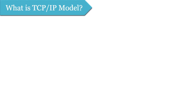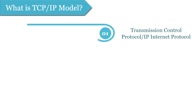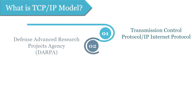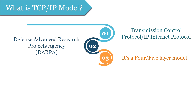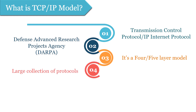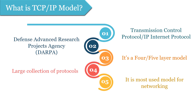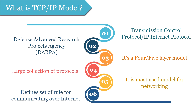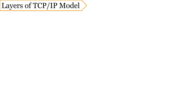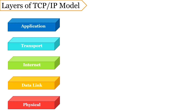Now let us move on to the TCP/IP model, which stands for Transmission Control Protocol Internet Protocol. It was funded by Defense Advanced Research Projects Agency, that is DARPA. In some books you might find it as a four-layer model and in some books as a five-layer model. TCP/IP is a protocol suite that consists of a large collection of protocols. It is the most used model for networking and defines a set of rules for communicating over the internet.